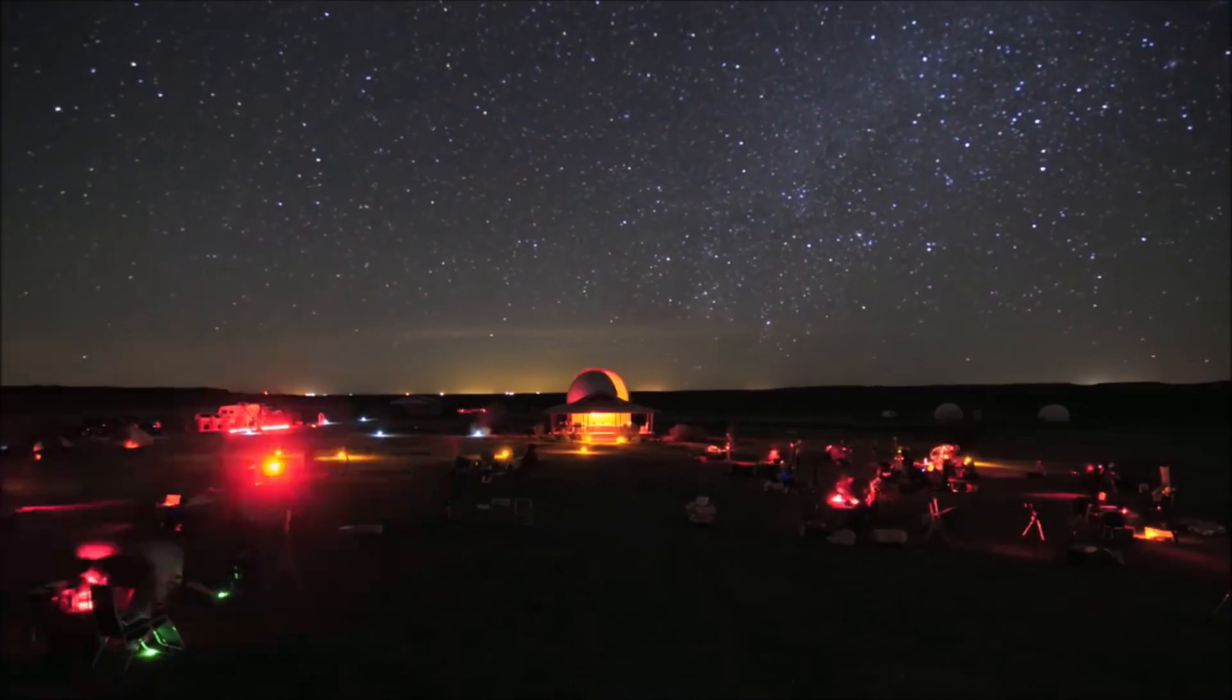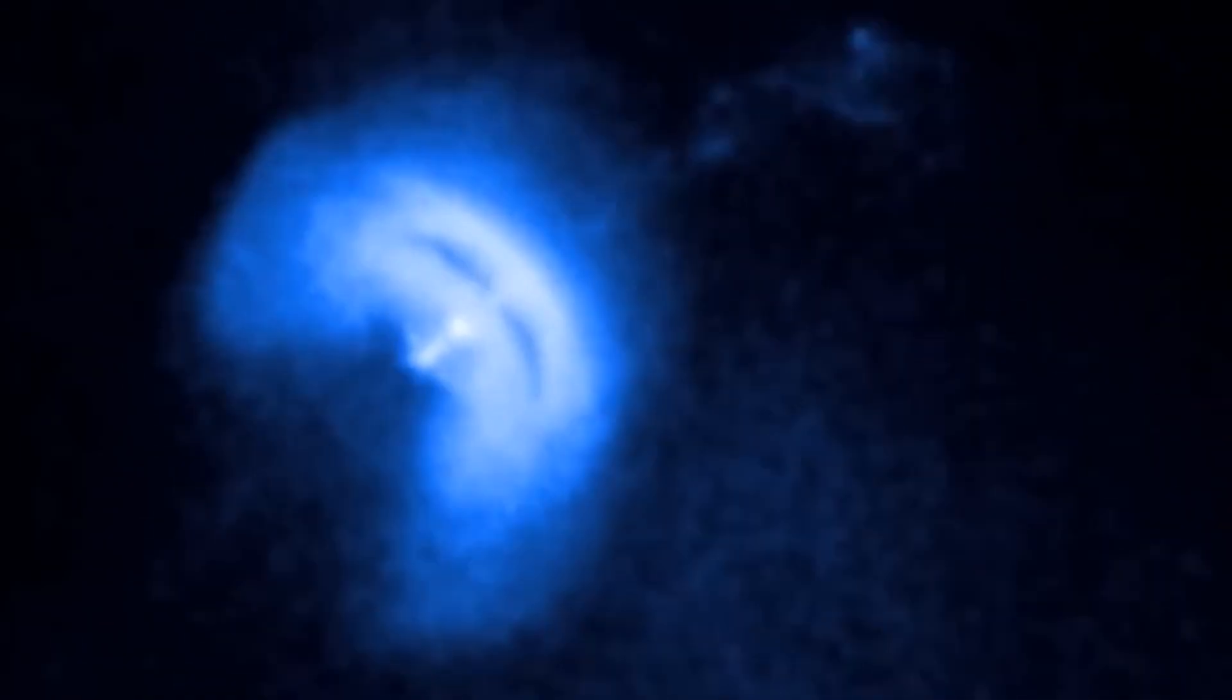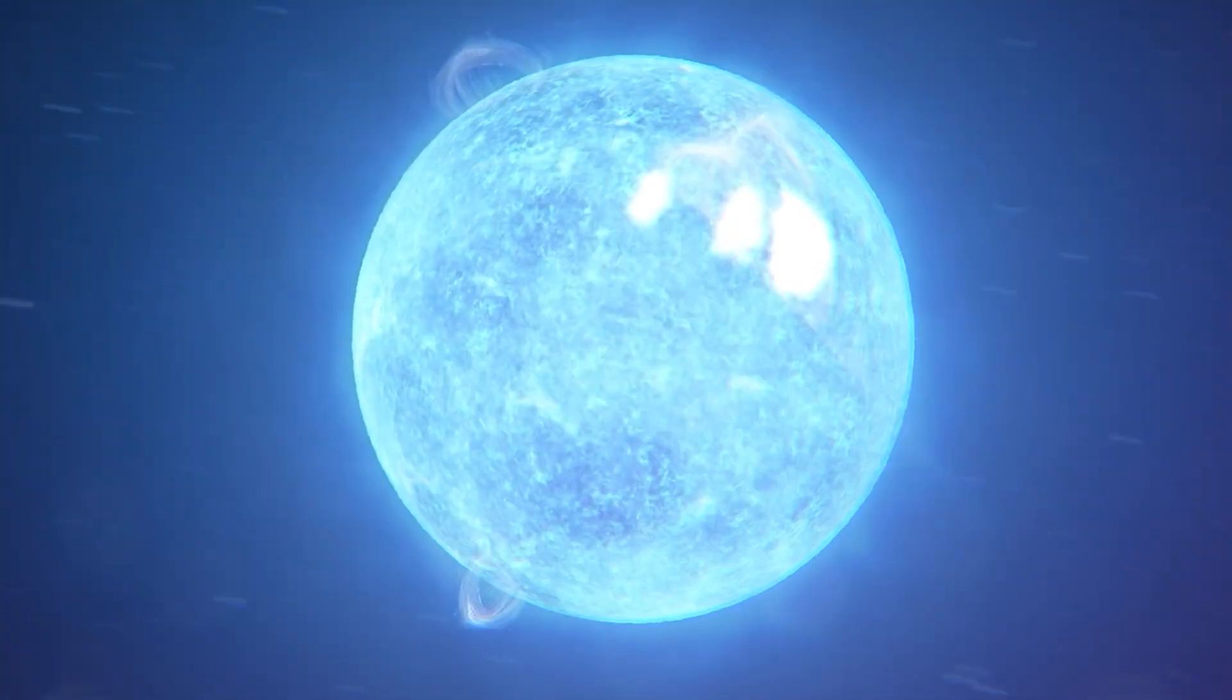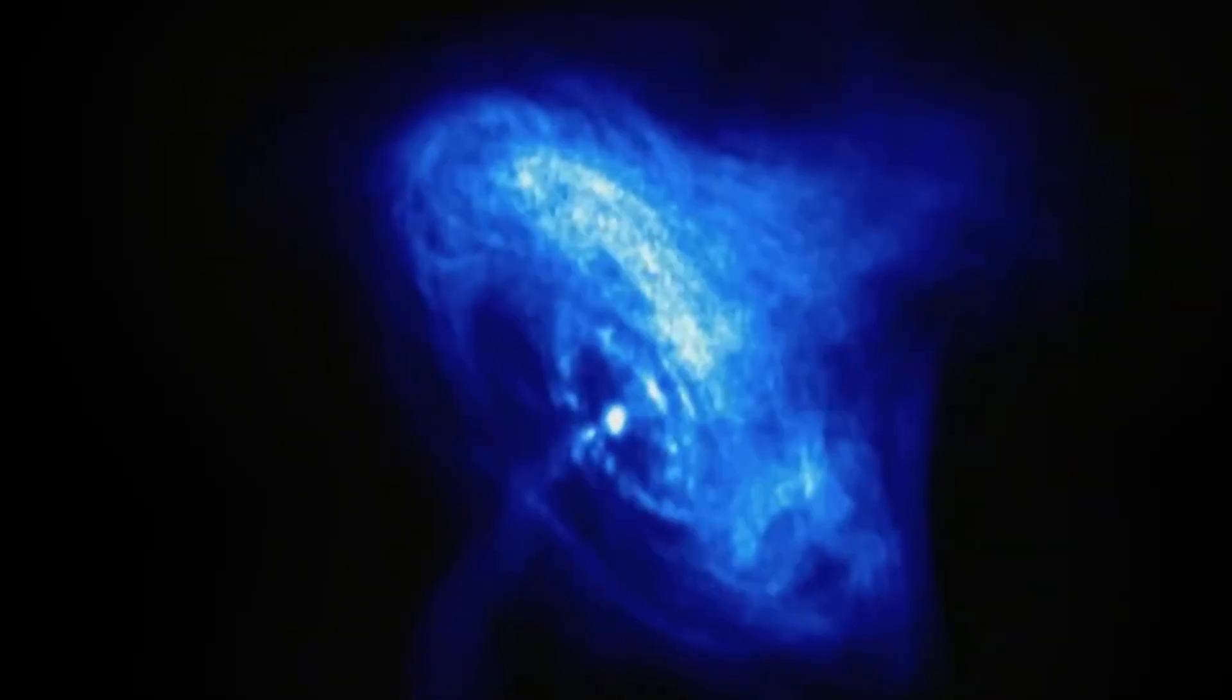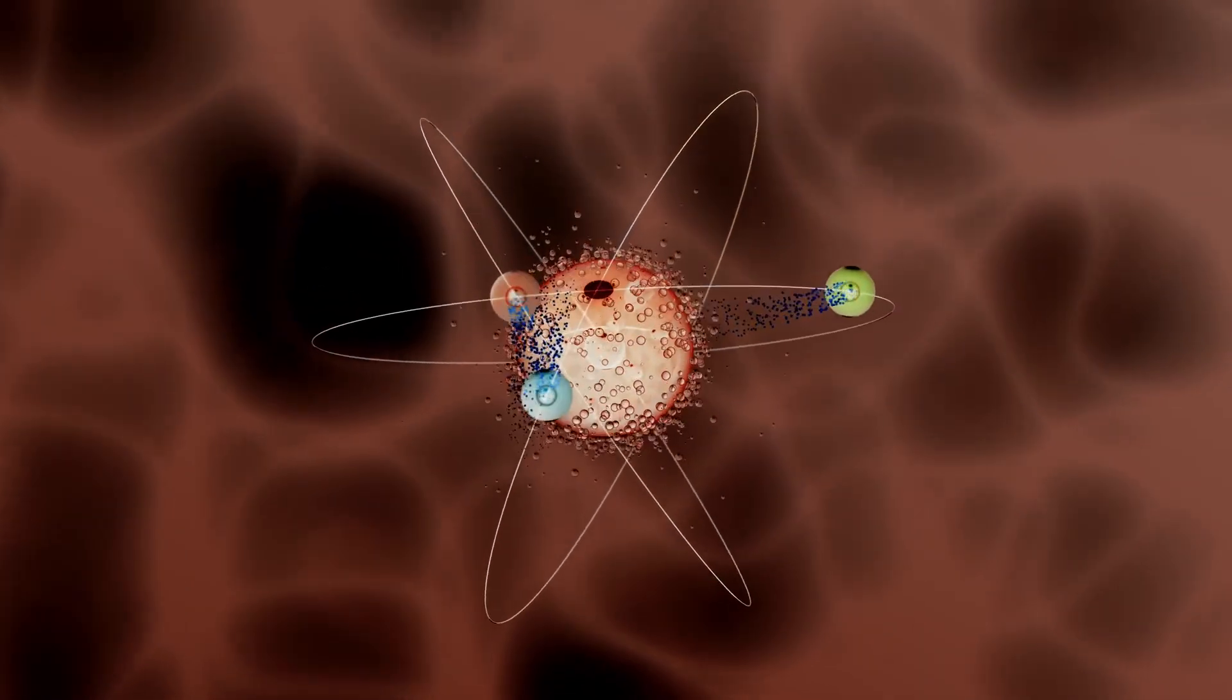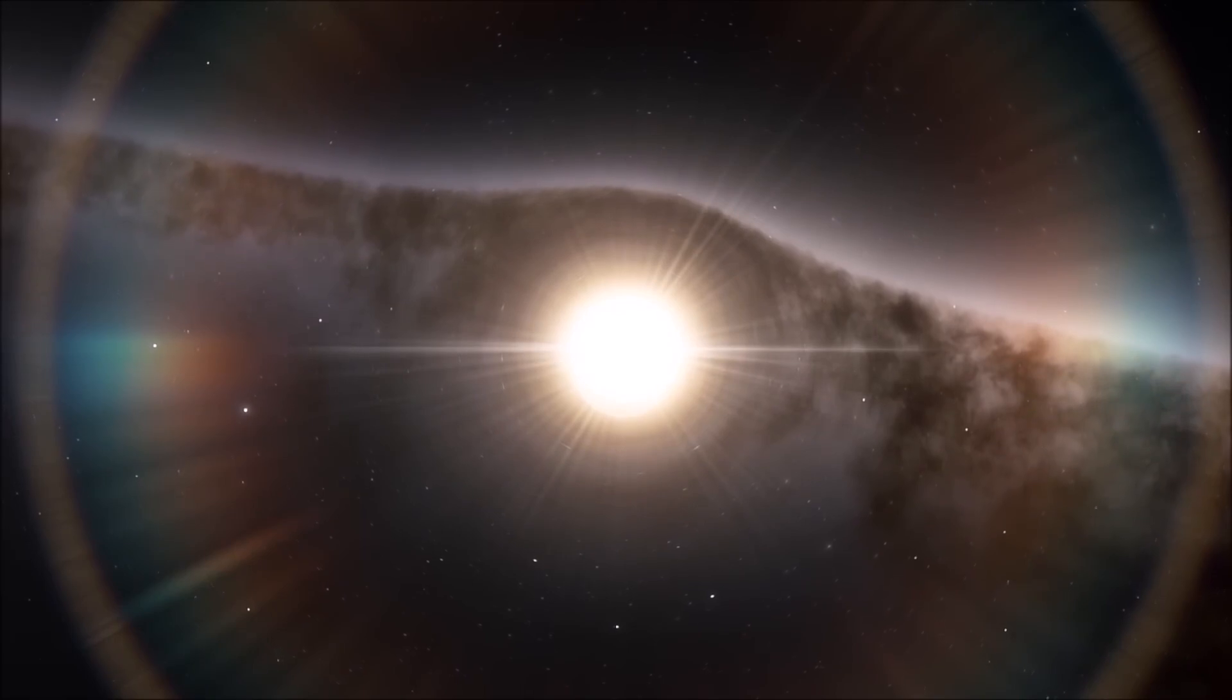Their gravity is beyond comprehension. On Earth, we think of gravity as something that keeps us grounded, but on a neutron star it's a force that bends reality itself. Space and time warp under its pull, creating an invisible well so deep that even light struggles to escape its influence. If you somehow tried to stand on its surface, you wouldn't even make it a fraction of a second. Your body would be crushed instantly, your atoms torn apart by tidal forces stronger than what black holes exert near Earth's orbit.